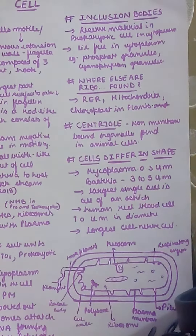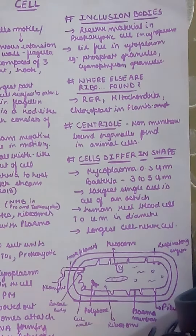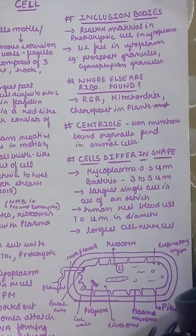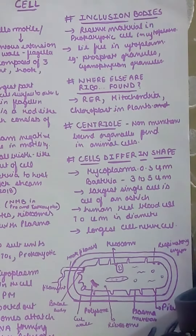Ribosomes are also found in other places — RER, that is rough endoplasmic reticulum. It is called rough endoplasmic reticulum because of the appearance of ribosomes on it. Ribosomes are also found in mitochondria and chloroplasts in plants.